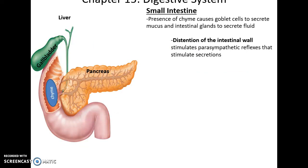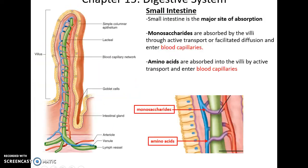Chyme distends the duodenum, the beginning of the small intestine, and this is the stimulus that causes hormones to be released to cause the pancreas to release its contents and the liver and gallbladder to release their contents. The small intestine is where most of the absorption of nutrients occurs. Monosaccharides, amino acids, and nucleic acids all get absorbed directly into the bloodstream. They are carried through active transport and facilitated diffusion through the epithelial cells and then into the blood capillaries.